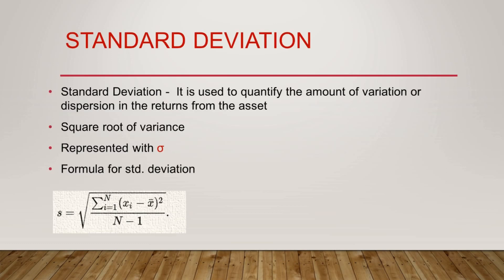Starting with standard deviation — standard deviation is used to quantify the amount of variation or dispersion in the returns from an asset. Any asset in which you are investing has some sort of risk involved. For example, if you are expecting a return of 16% and you are getting a standard deviation of 2%, that 2% indicates the risk — it means your expected return could go lower by 2%. That is the deviation, the dispersion, indicating the volatility.